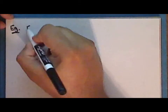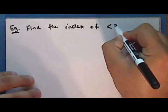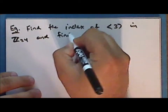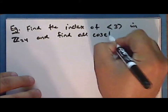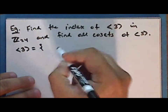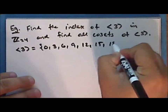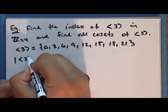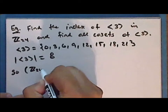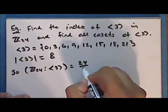The first exercise is to find the index of the cyclic subgroup generated by 3 in the group of integers modulo 24, and find all cosets of this subgroup. The cyclic subgroup generated by 3 contains the elements 0, 3, 6, 9, 12, 15, 18, and 21. The order of this group is 8, and so the index of this subgroup in the integers modulo 24 is 24 divided by 8, which is 3.